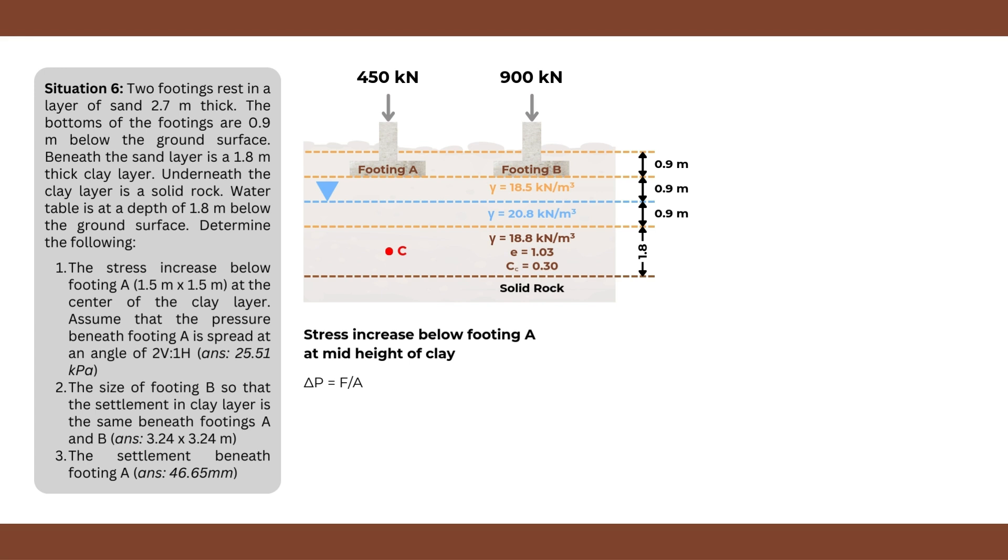For those unfamiliar, this is just a ratio for the measurement of spread. V stands for vertical and H stands for horizontal. To help you visualize, notice the trapezoid formed below footing A. The length increase on one side of the area is half of the increase of the vertical or the height of the point observed from the base of the footing. To determine our area measurements, we need to find the vertical height first. This is fairly easy given the figure - we add the two 0.9 from the base of footing, then we know that mid-height of clay is 1.8 divided by 2, which is also 0.9. Therefore, the total height is 2.7.